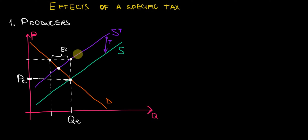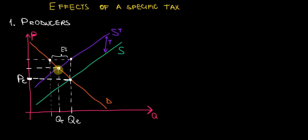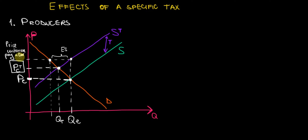Let's note this as quantity after the tax — QT for short — at an equilibrium price after the tax. This price after the tax is what customers are paying. The firms are charging this price on the market because they are forced to increase the price by the amount of tax. This is going to be the price consumers pay after the tax, written as PCT — price customers pay after tax. I use the words customers and consumers interchangeably.